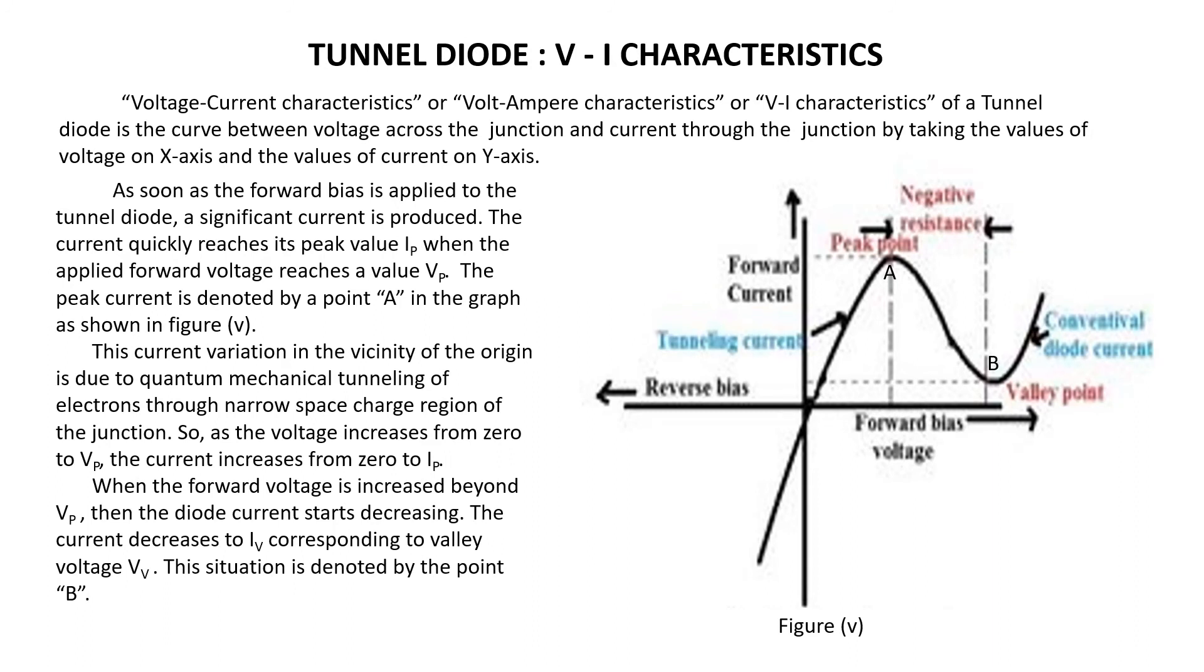Coming to the characteristics, these are the VI characteristics of tunnel diode. Voltage-current characteristics or volt-ampere characteristics is a curve between voltage across the junction and current through the junction, taking values of voltage on X-axis and current on Y-axis.